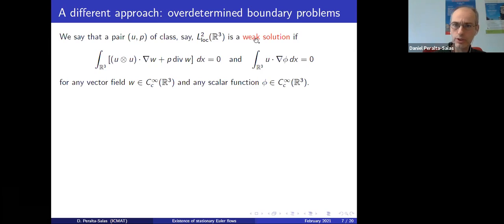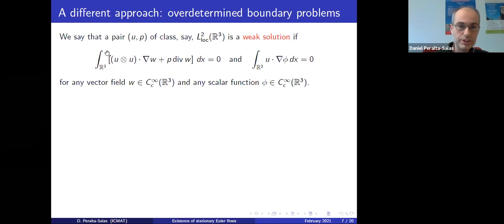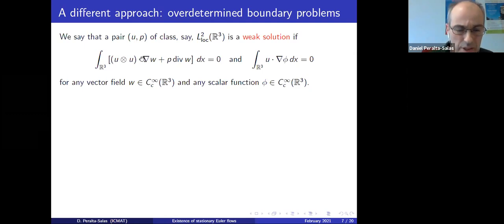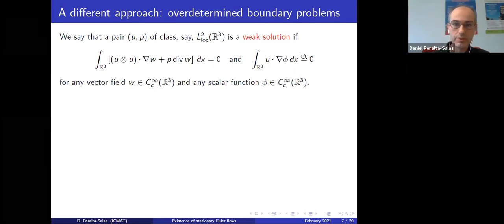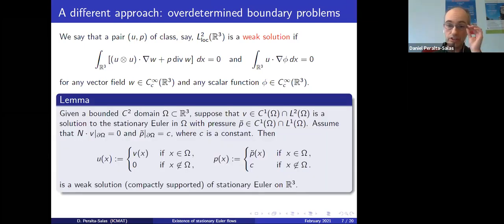Here is the definition of a weak solution of the stationary Euler equation. We say a pair (u, p) with u in L² in R³ is a weak solution if the condition involving the tensor product u⊗u, integrated against any compactly supported vector field w via the trace of the matrix product plus p times divergence of w, equals zero for all such w; and u is orthogonal to the gradient of any smooth compactly supported function — the usual divergence-free condition.